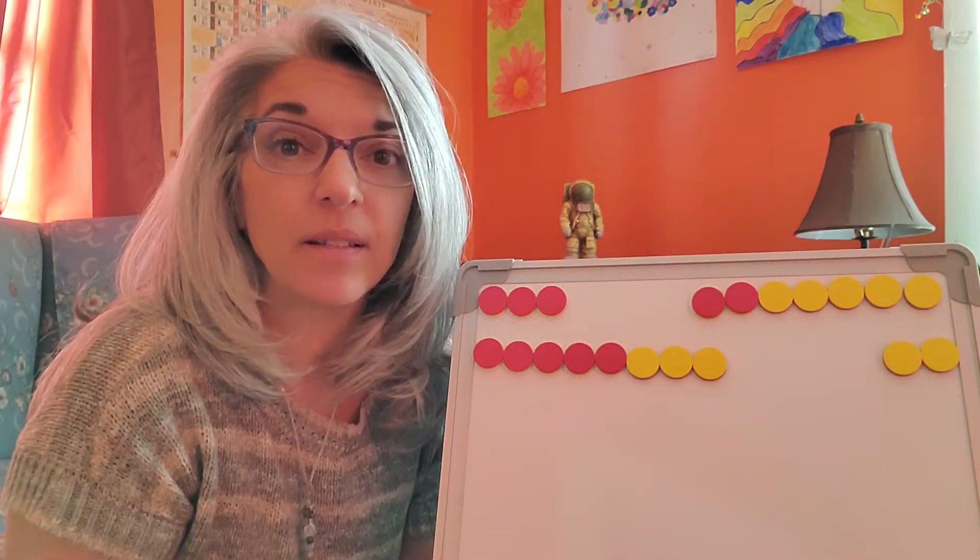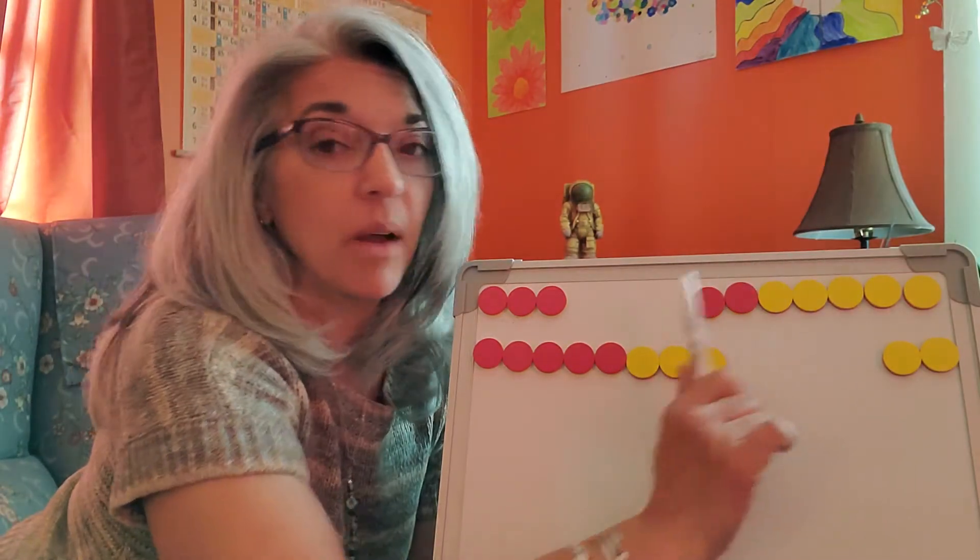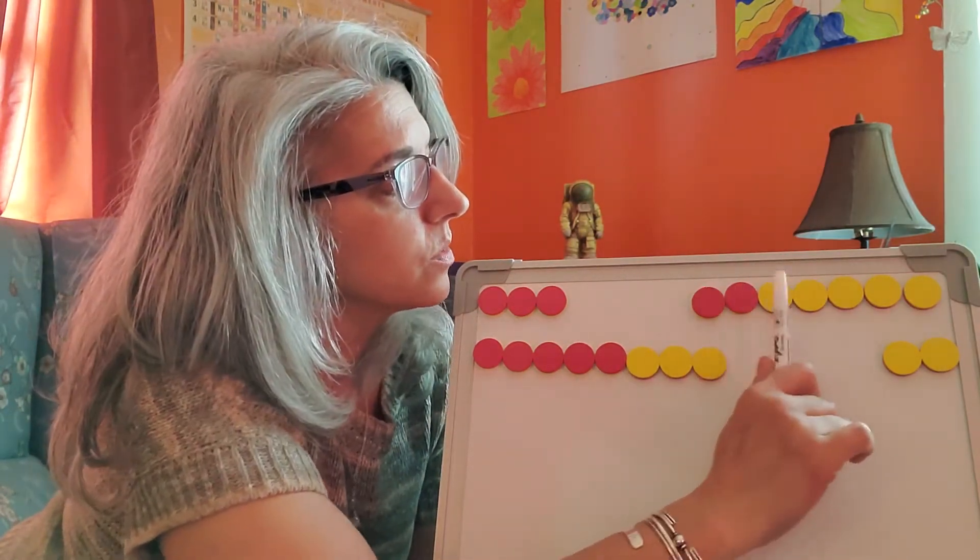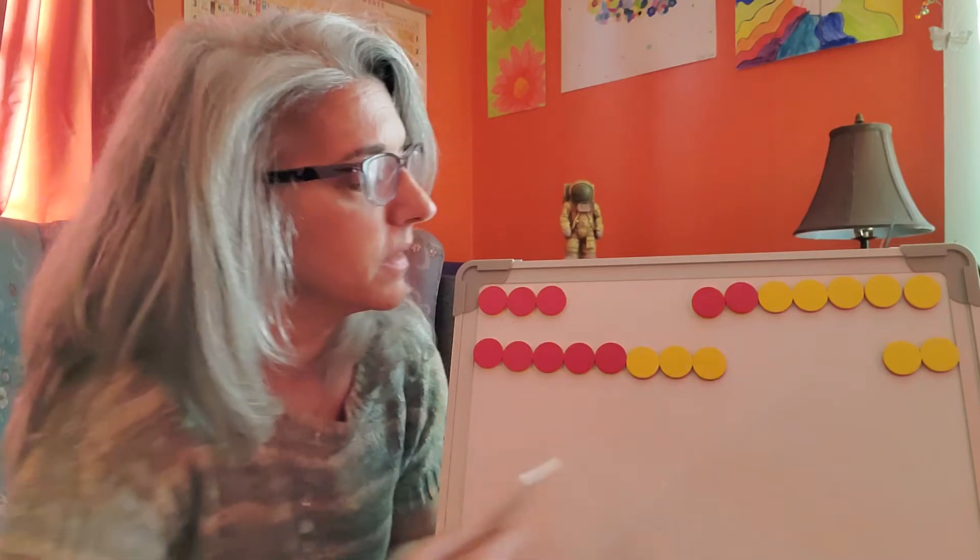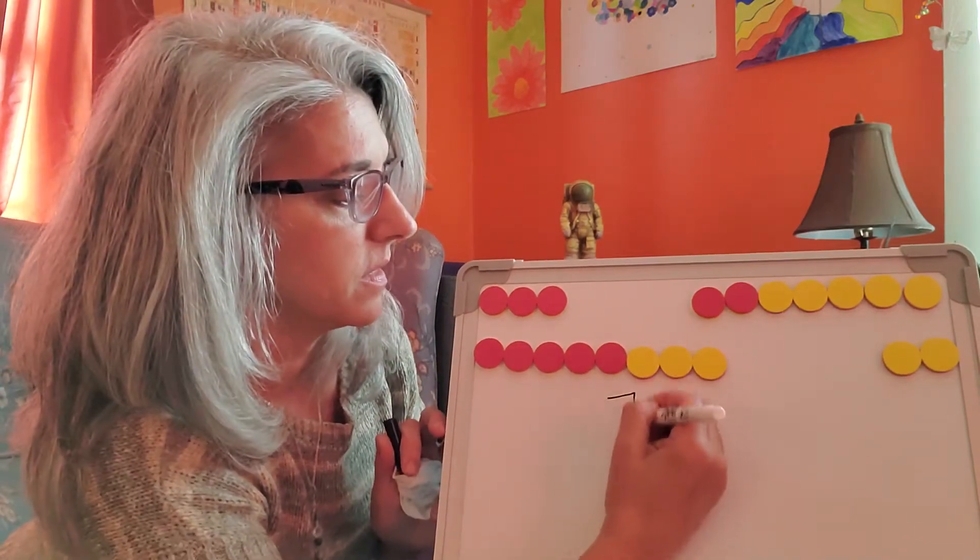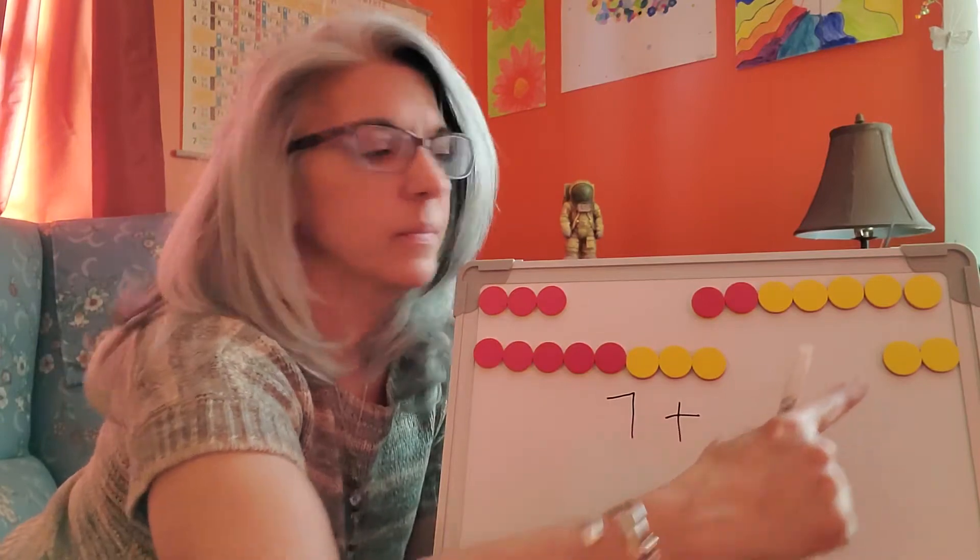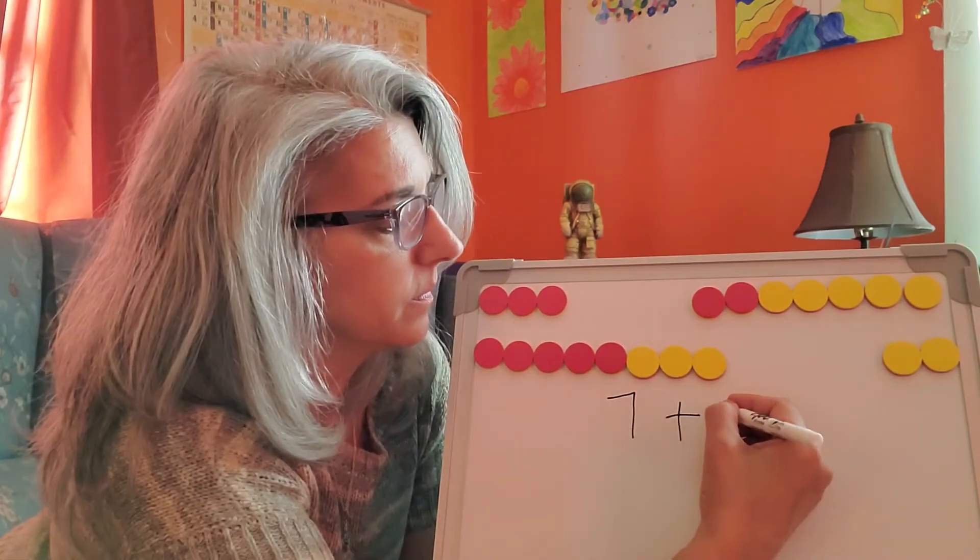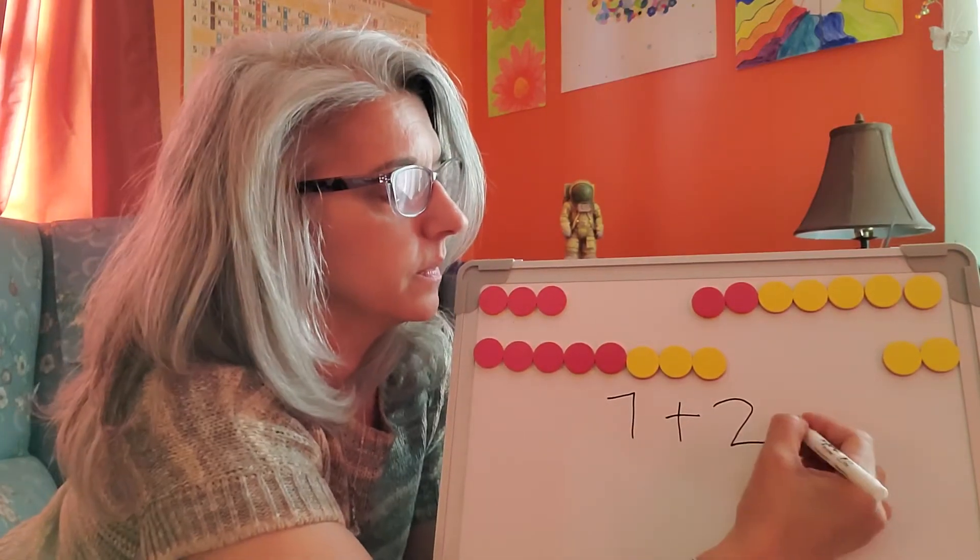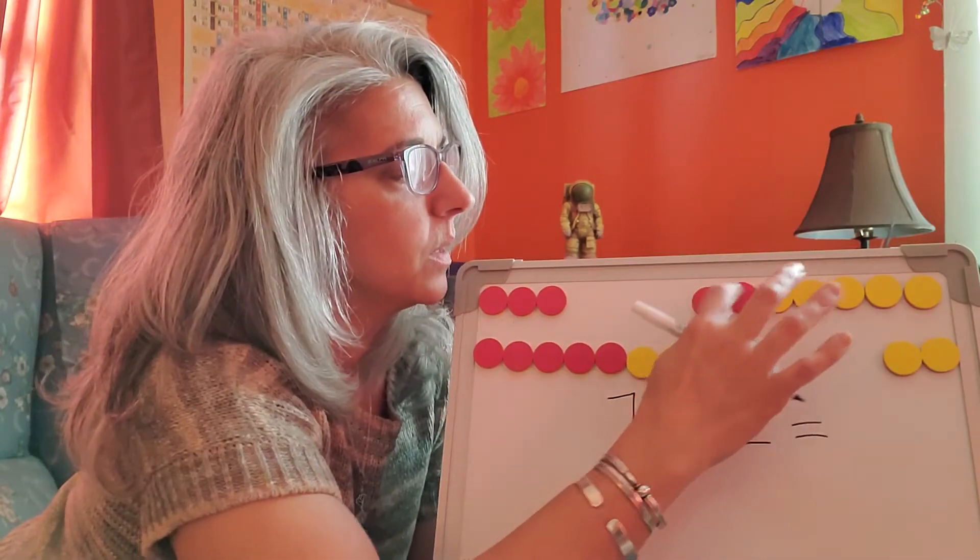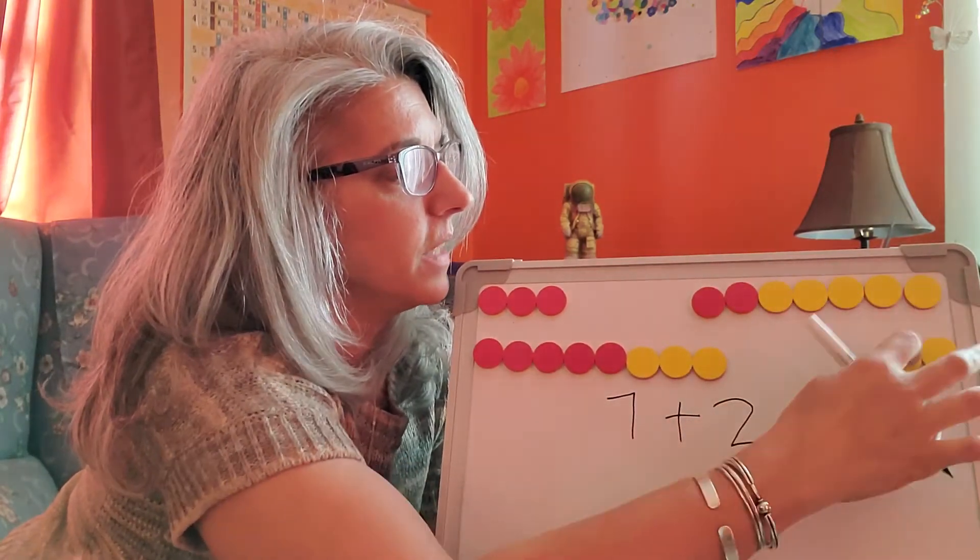Now I'm going to write a number sentence. I'm going to use the top row for my first number: 1, 2, 3, 4, 5, 6, 7. I'm going to just write 7 plus your second row, 1, 2, equals 1, 2, 3, 4, 5, 6, 7, 8, 9.